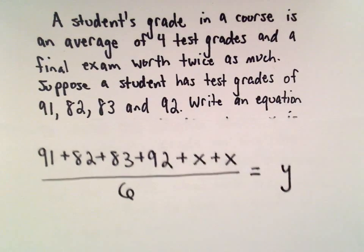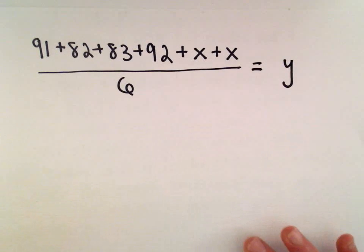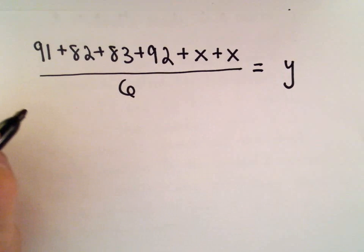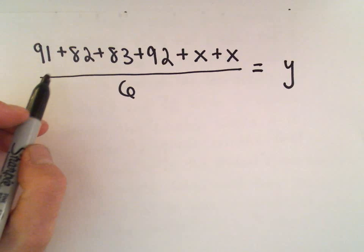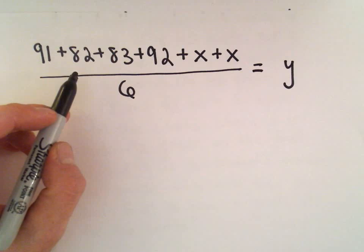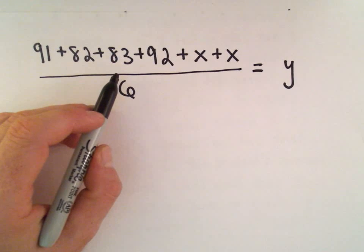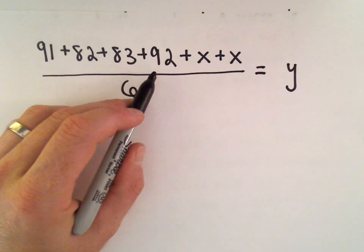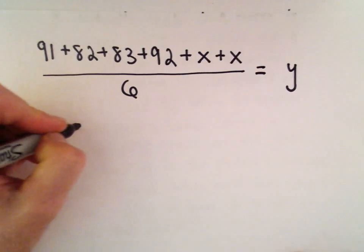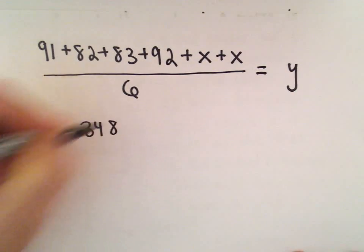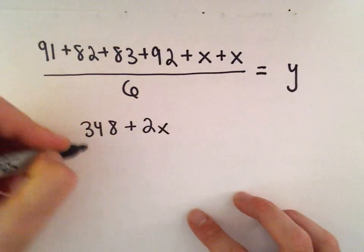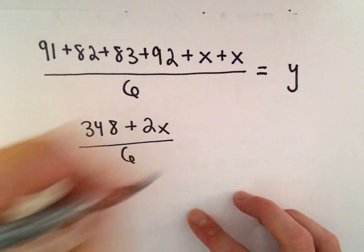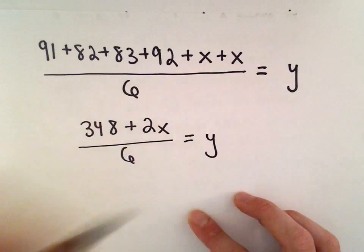I'm going to simplify the numerator using a calculator here. So 91 plus 82 plus 83 plus 92, that's going to be 348, and then we've got one X and another X, so that'll give us 348 plus 2x divided by 6 equals Y. So there's our equation to model that situation.